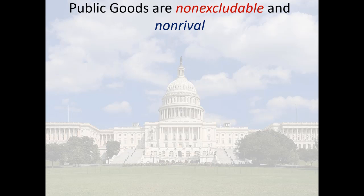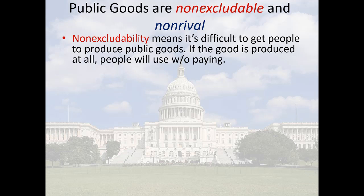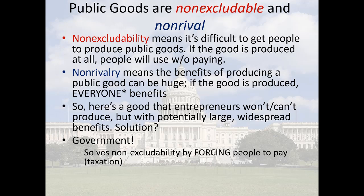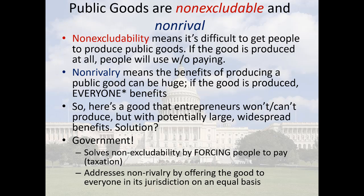To review, public goods have these unique attributes: they are non-excludable and non-rival. Non-excludability means it's difficult to get people to produce public goods — you can't force people to pay for them, therefore you can't collect income from producing them. Non-rivalry means benefits are large and spill over to additional people with no extra cost. Entrepreneurs are reluctant to produce public goods because they can't collect income. Government solves non-excludability by forcing people to pay through taxation, and addresses non-rivalry by offering the good to everybody in a jurisdiction on an equal basis — essentially provided for free after taxes, with no additional charge to access basic public goods like national defense, highways, or parks.